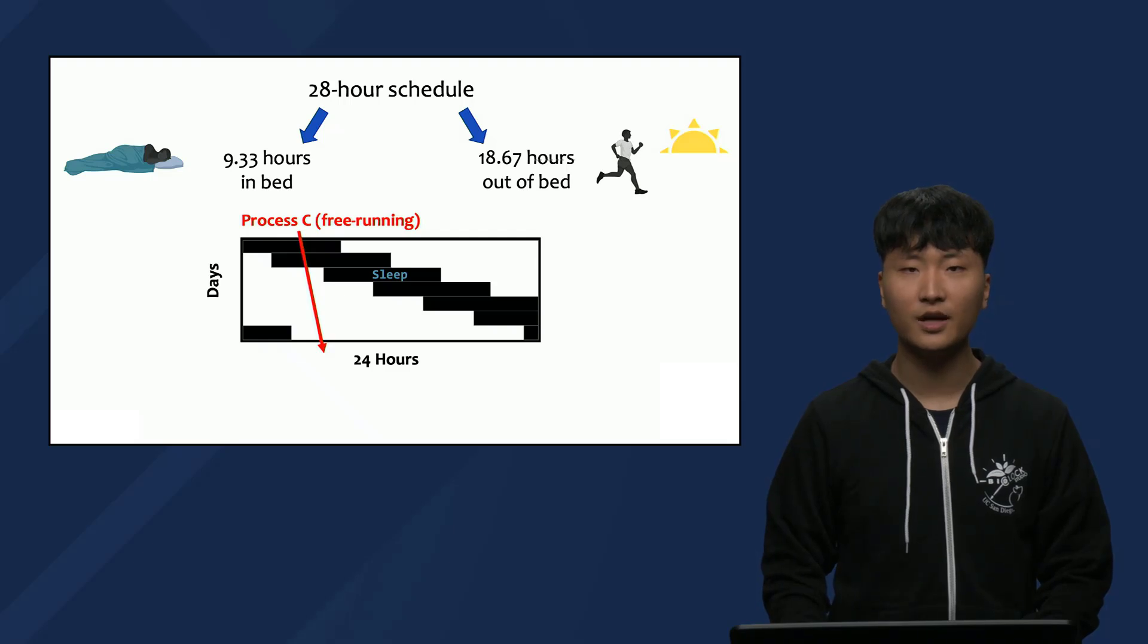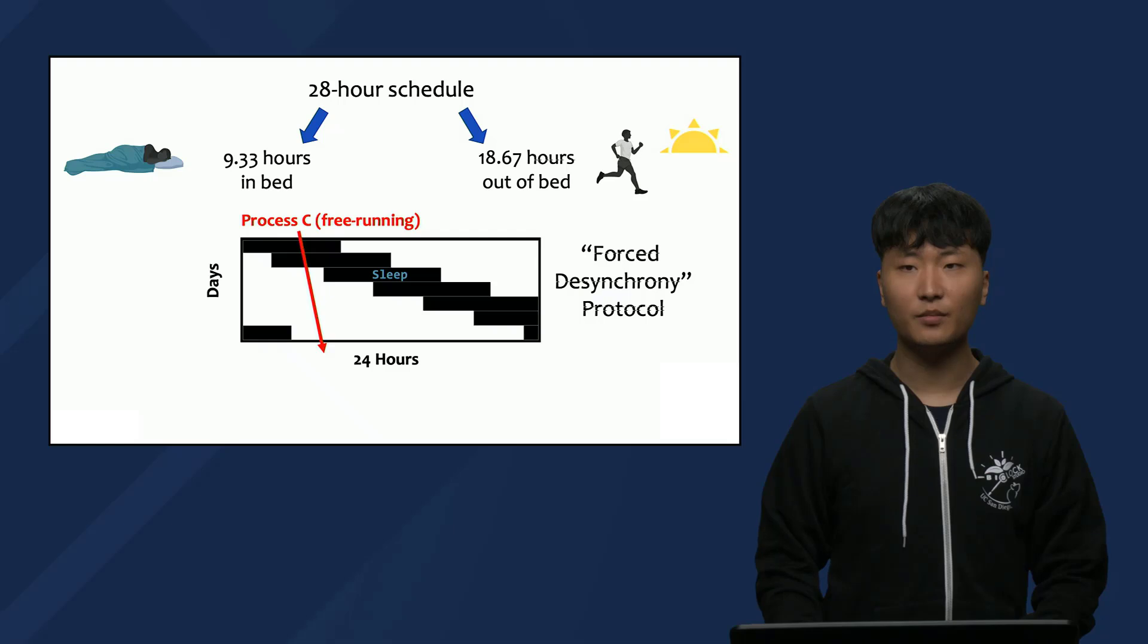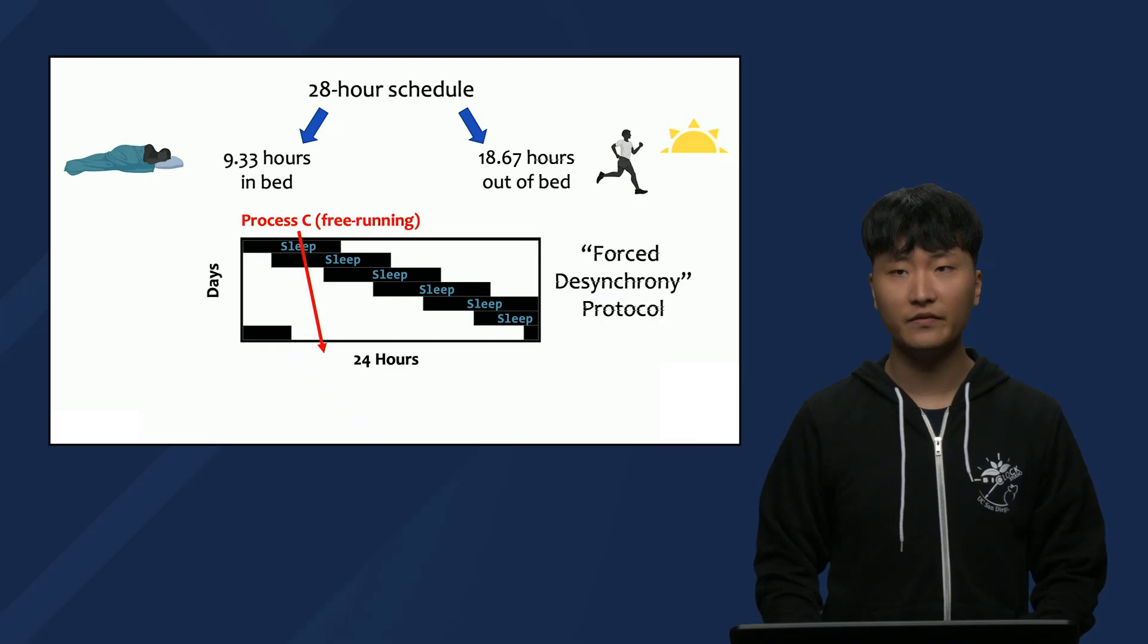This kind of study design is called a forced desynchronous protocol because the clock cannot sync with the environment. It has been used by a number of research labs because it is one of the only ways to isolate effects of Process C and Process S in humans. Because the participants are free running, the opportunity to sleep in a 28-hour day falls at all different times of their internal circadian clock across the study period. This way, the researchers can look separately at the effect of circadian phase, Process C, and the prior wake or length of time the participant was awake building sleep pressure, Process S.